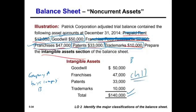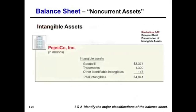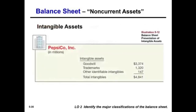For PepsiCo's intangible assets, they show a lot of goodwill — from buying other companies. They also have trademarks and other identifiable intangibles. Note that this trademark is not PepsiCo's own self-created trademark — when you create your own trademark, you don't put it on the books. We'll talk about that later on.